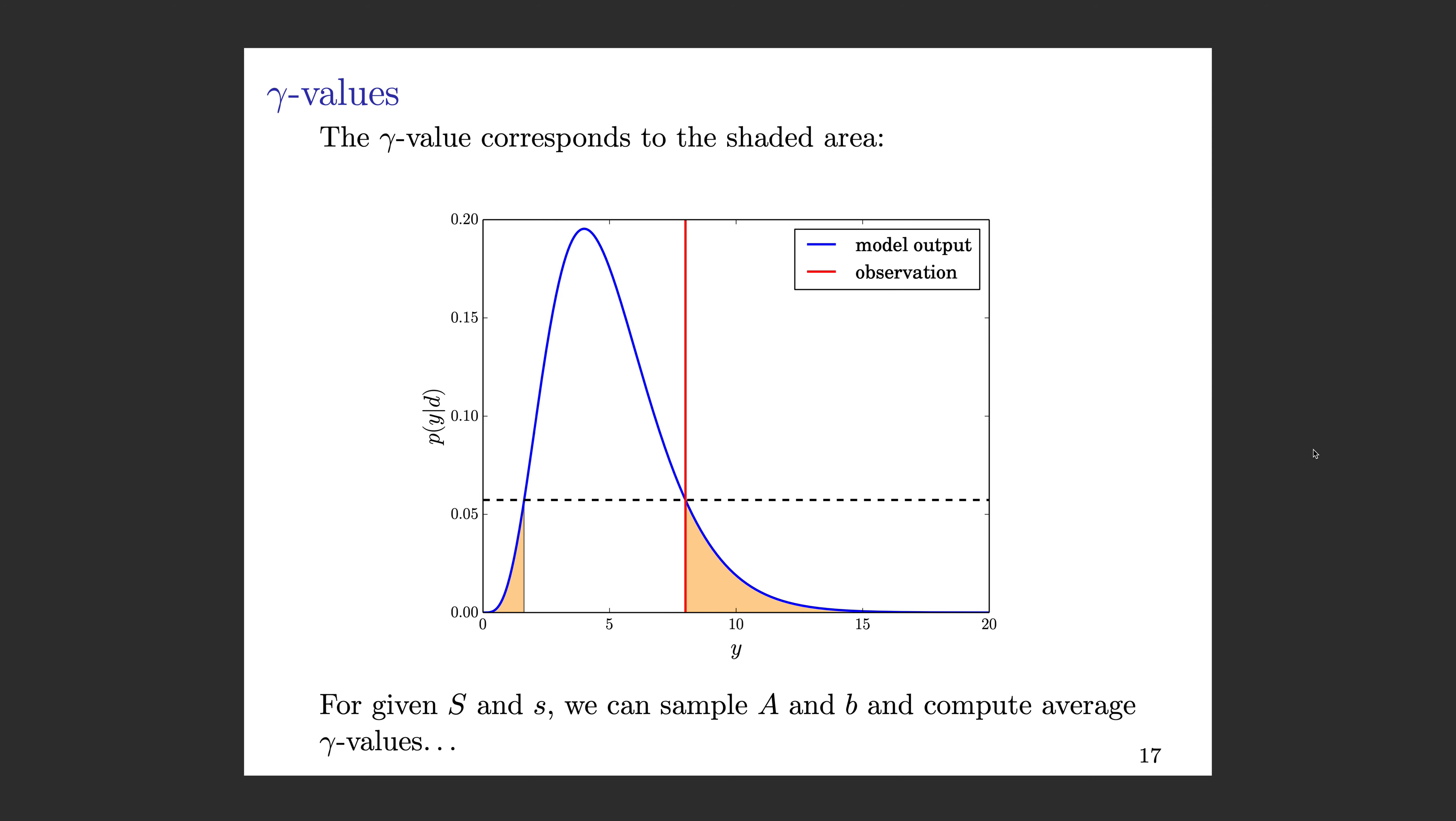If we have a high gamma value, that indicates consistency between the model output and observation. If we have a very low gamma value, then that indicates the model and data are in fact inconsistent. We might still get some low gamma values, but in general, if our model and our data are consistent, then we should have more gamma values that are not very small.